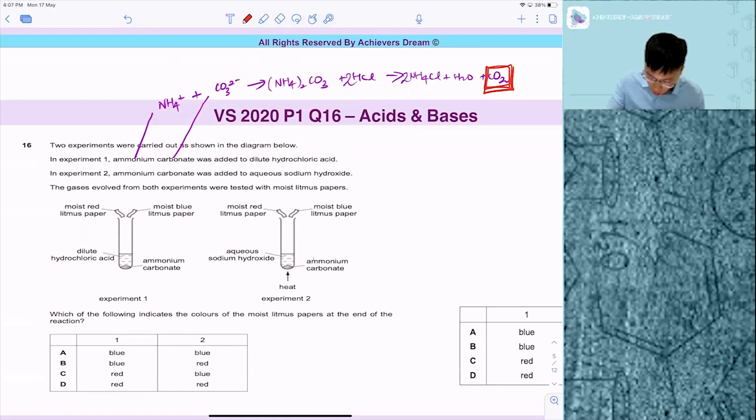The next one: ammonium carbonate plus NaOH. This is ammonium salt plus base, so (NH4)2CO3 plus NaOH.